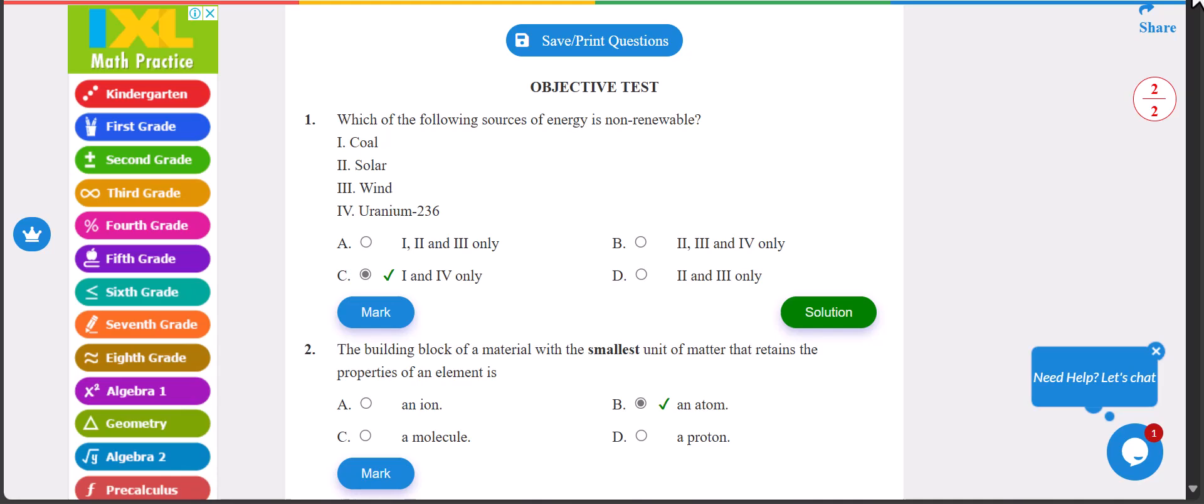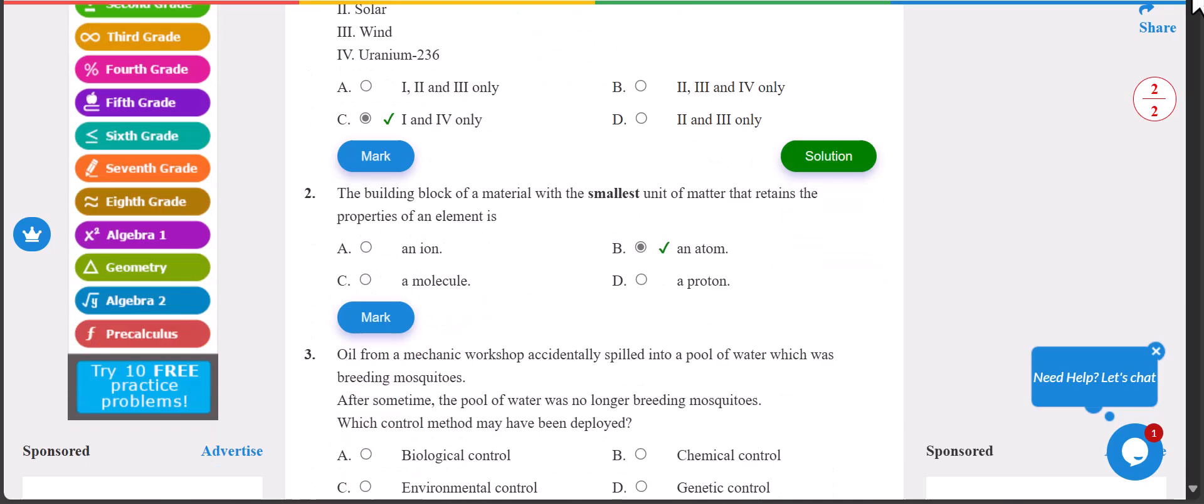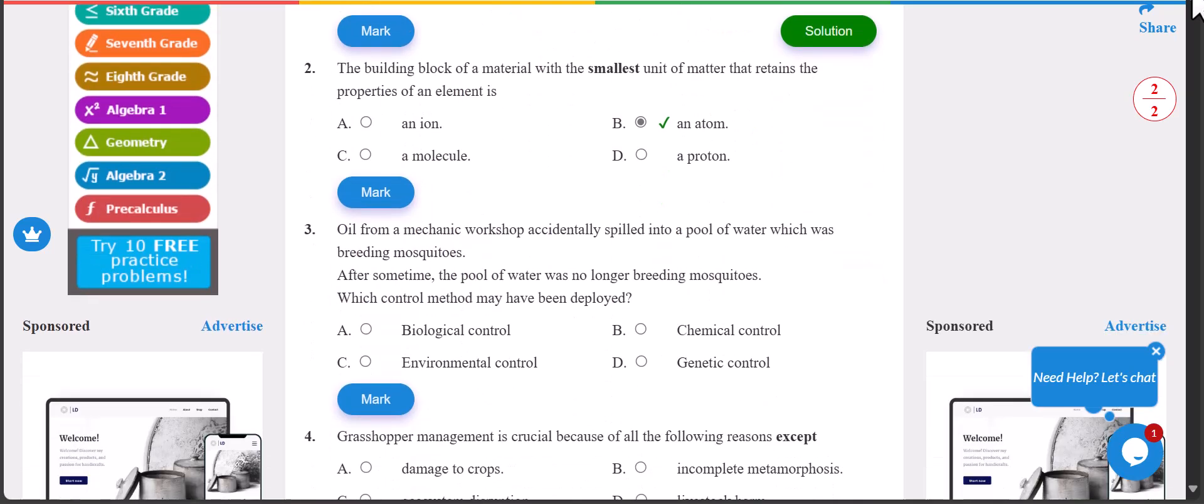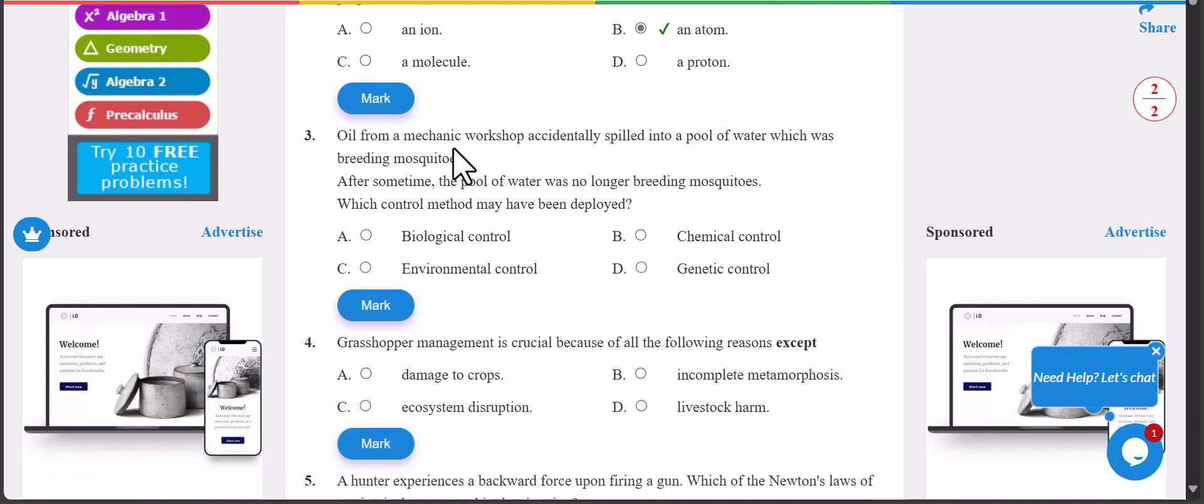Number two: the building block of a material with the smallest unit of matter that retains the properties of an element is what? The answer is atom. Number two is B.